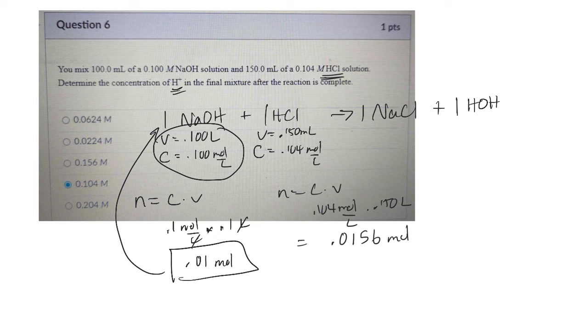But now, because it's a one-to-one relationship, if I have 0.01 of this stuff and 0.0156 of this stuff, since it's one-to-one, if there's 0.01 of these, it's going to react with 0.01 of the hydrochloric acid.